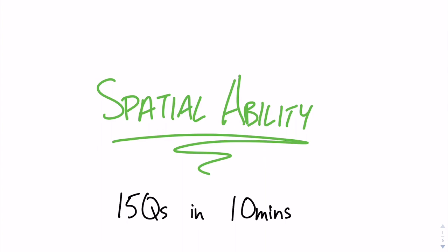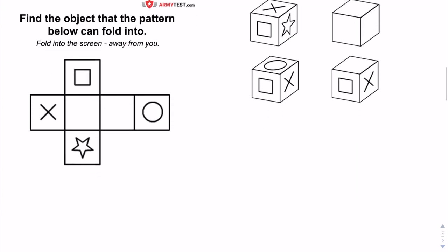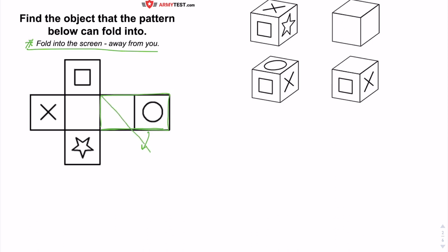To explain what I mean, let's look at the first question here, which says: find the object that the pattern below can fold into — fold into the screen away from you. Basically that means you're going to fold everything backwards rather than towards you. If we were folding this away from you it would become like this; if we were folding it towards you — which is incorrect — it would be like poking out of the screen towards you. So just keep that in mind.